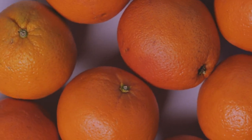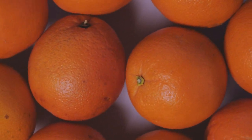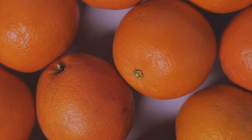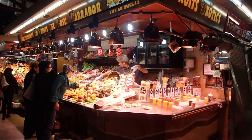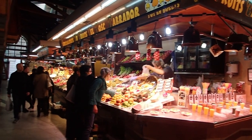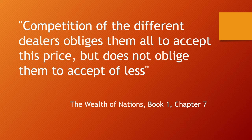Oranges, for example, are more likely to be reduced for a quick sale than iron. When the supply is the same as demand, the market price will be the same, or nearly the same, as the natural price. Competition of the different dealers obliges them to accept this price, but it does not oblige them to accept less.